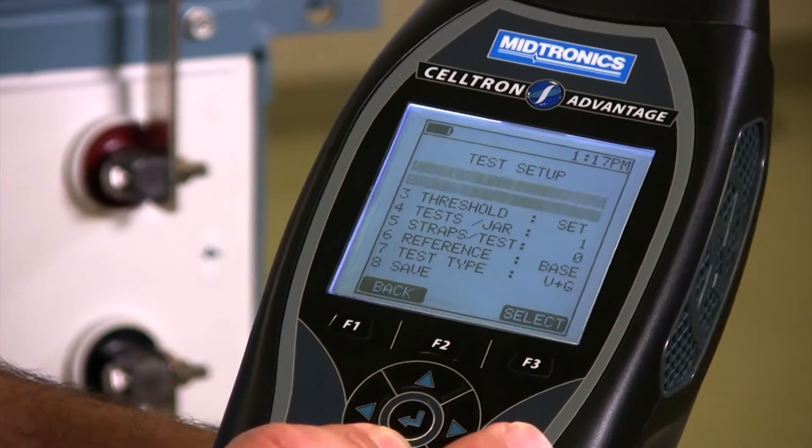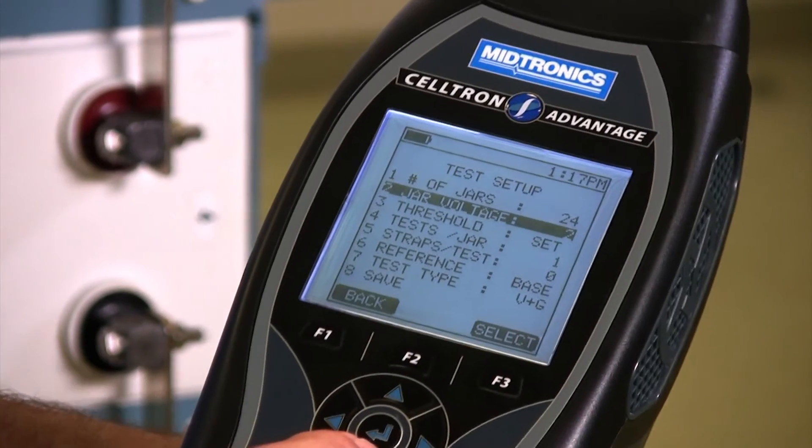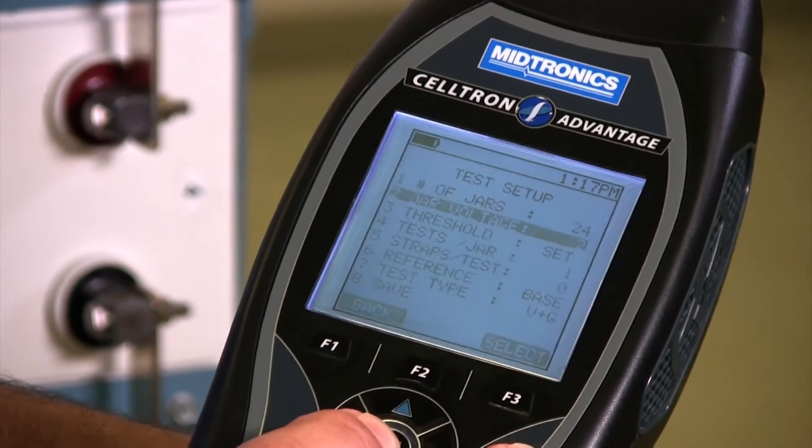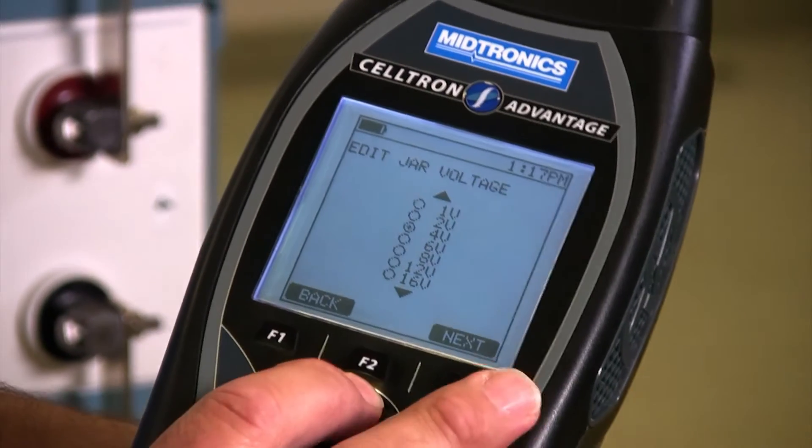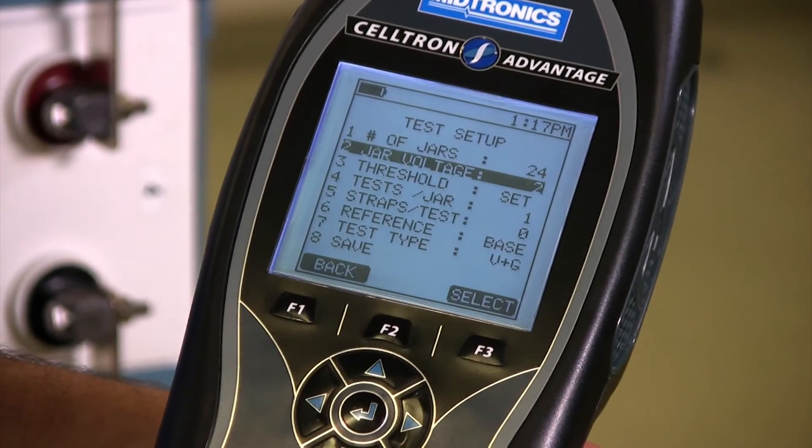Then you need to put in the nominal voltage of the cells that you're testing. Drill into that menu. Scroll to the right voltage. These are two volt cells. I'm going to pick that.